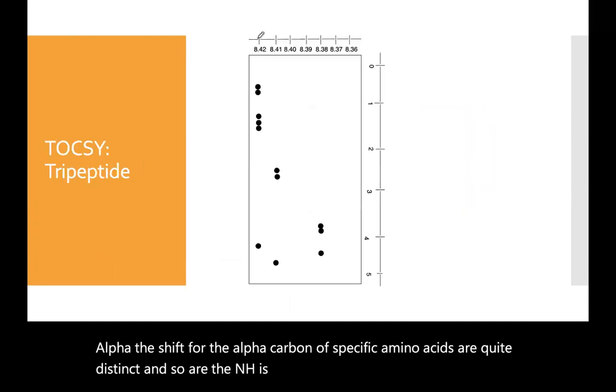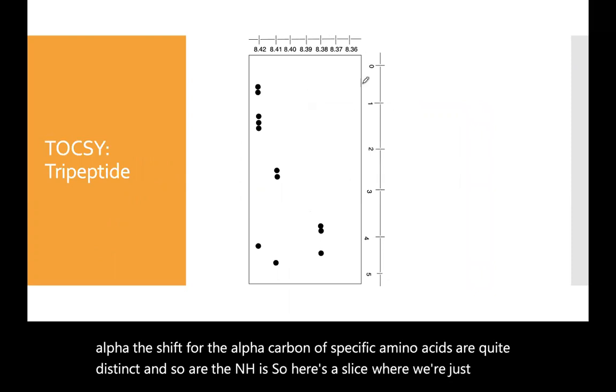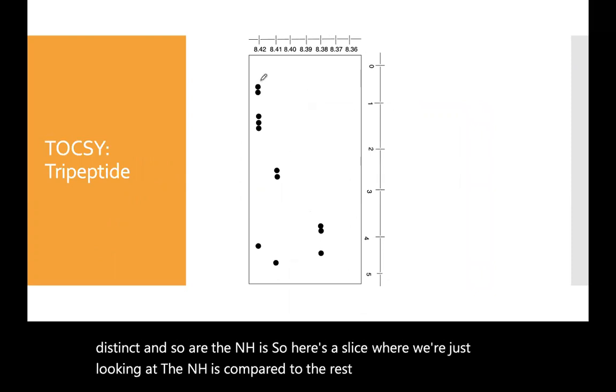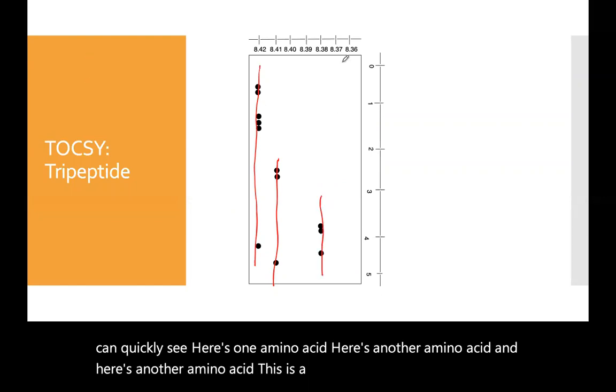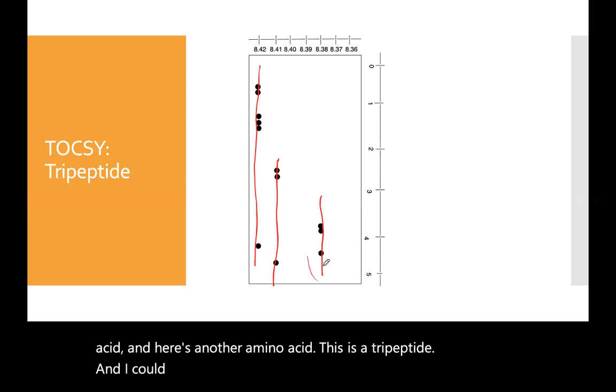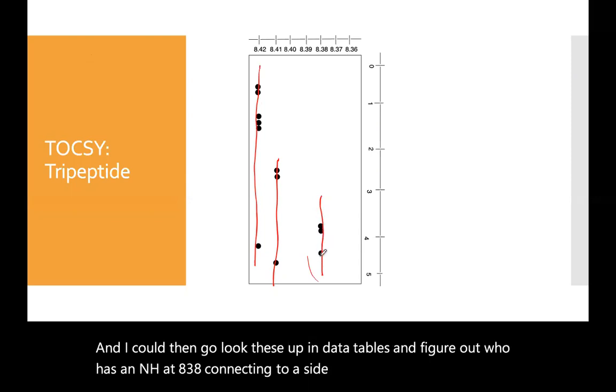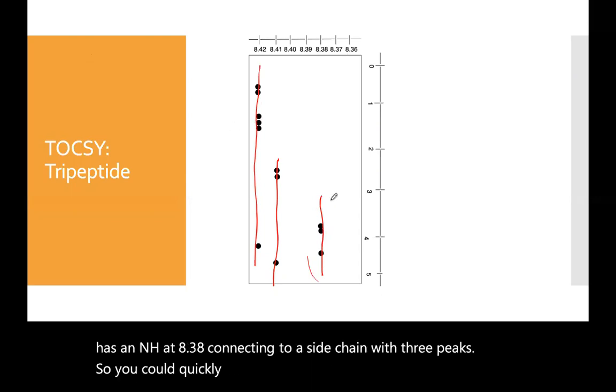So here's a slice where we're just looking at the NHs compared to the rest of the side chains. And you can quickly see here's one amino acid, here's another amino acid, and here's another amino acid. This is a tripeptide. And I could then go look these up in data tables and figure out who has an NH at 8.38 connecting to a side chain with 3 ppm. So you could quickly determine who the amino acids are in a tripeptide or larger until it starts to overlap each other.